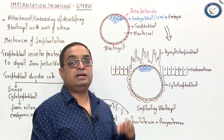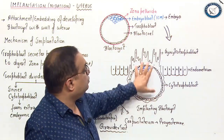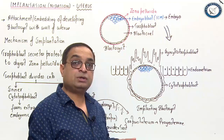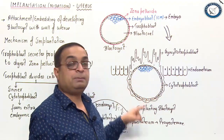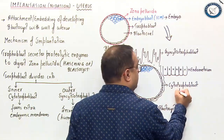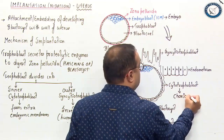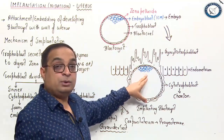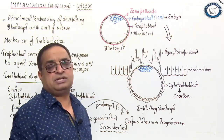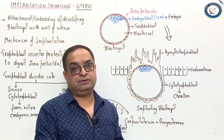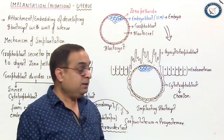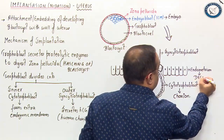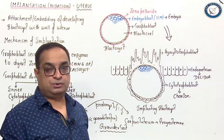Trophoblast divides into two layers: the cytotrophoblast and syncytiotrophoblast. Syncytiotrophoblast penetrates deep into the endometrium, lays the foundation for the placenta, and secretes HCG. Cytotrophoblast plays a role in the formation of the chorion layer, which is an extra-embryonic membrane — the outermost extra-embryonic layer covering the embryo. The ICM cells form the embryo proper. During implantation, the blastocyst completely sinks into the endometrium — that is called interstitial implantation. The endometrium of the pregnant uterus is called decidua.